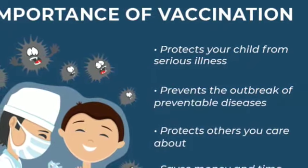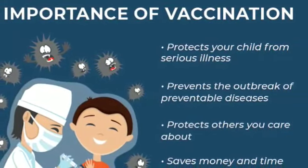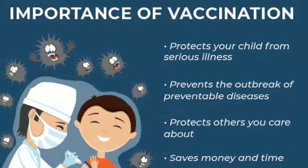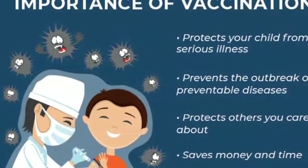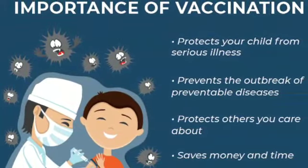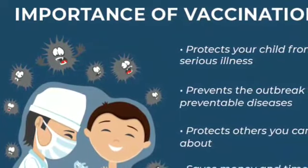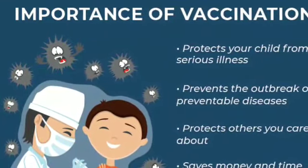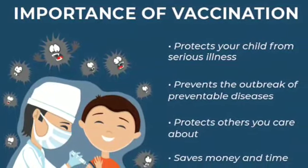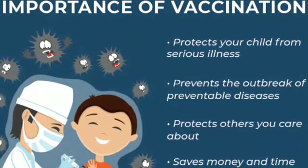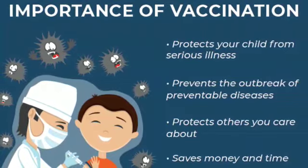Vaccination protects children from serious illness and complications of vaccine-preventable diseases, which can include amputation of an arm or leg, paralysis of a limb, hearing loss, convulsions, brain damage, and death. Vaccine-preventable diseases such as measles, mumps, and whooping cough are still a threat. Immunization can save your child's life — because of advances in medical science, your child can be protected against more diseases than ever before.